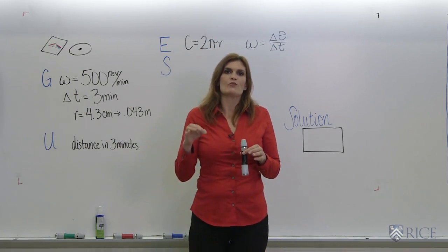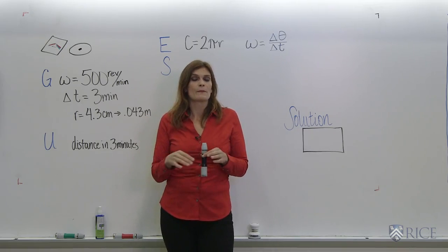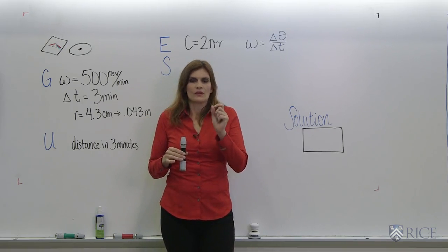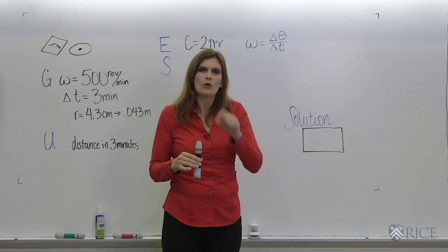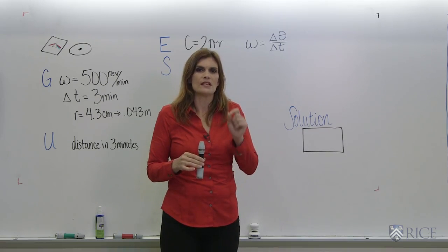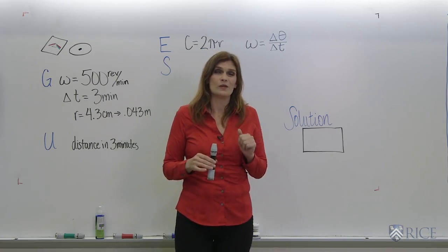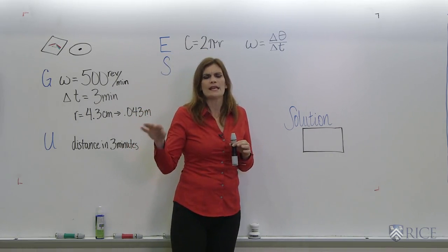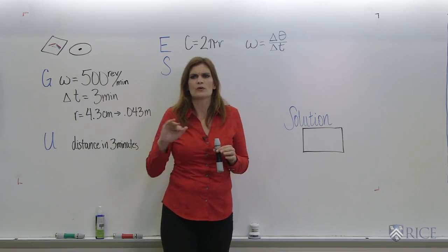So we've got a piece of dust on a CD, and the spin rate is 500 revolutions per minute, or RPMs. The piece of dust is 4.3 centimeters from the center, and we want to know what the total distance traveled by that piece of dust is in three minutes. We're assuming it stays on the CD, and we're assuming that it's a constant speed, that there's no acceleration.